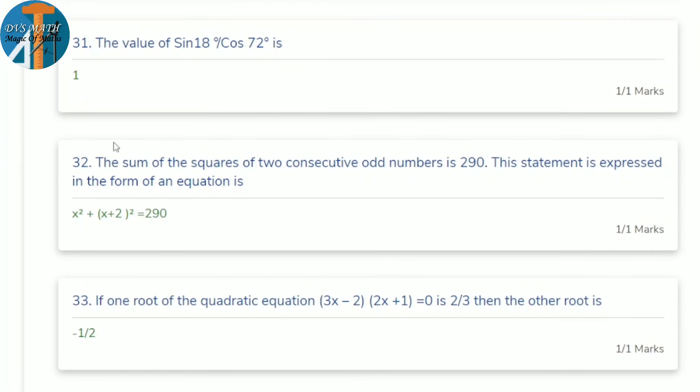31st question: find the value of sin 18°/cos 72°. These are complementary angles, so sin 18° = cos 72°. The division gives exactly 1.